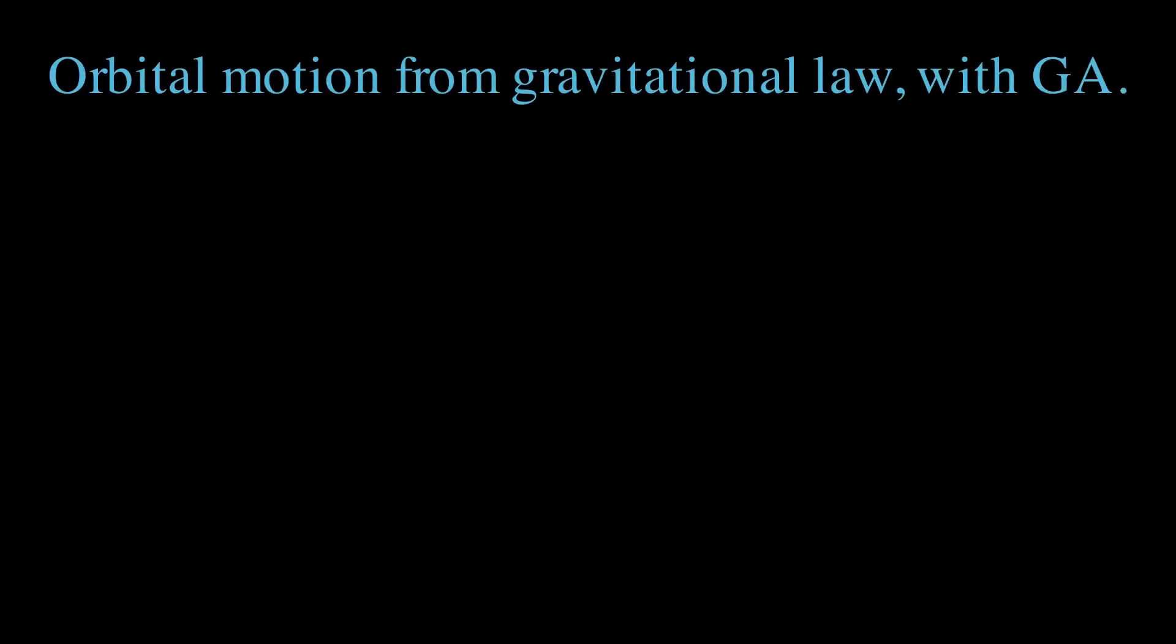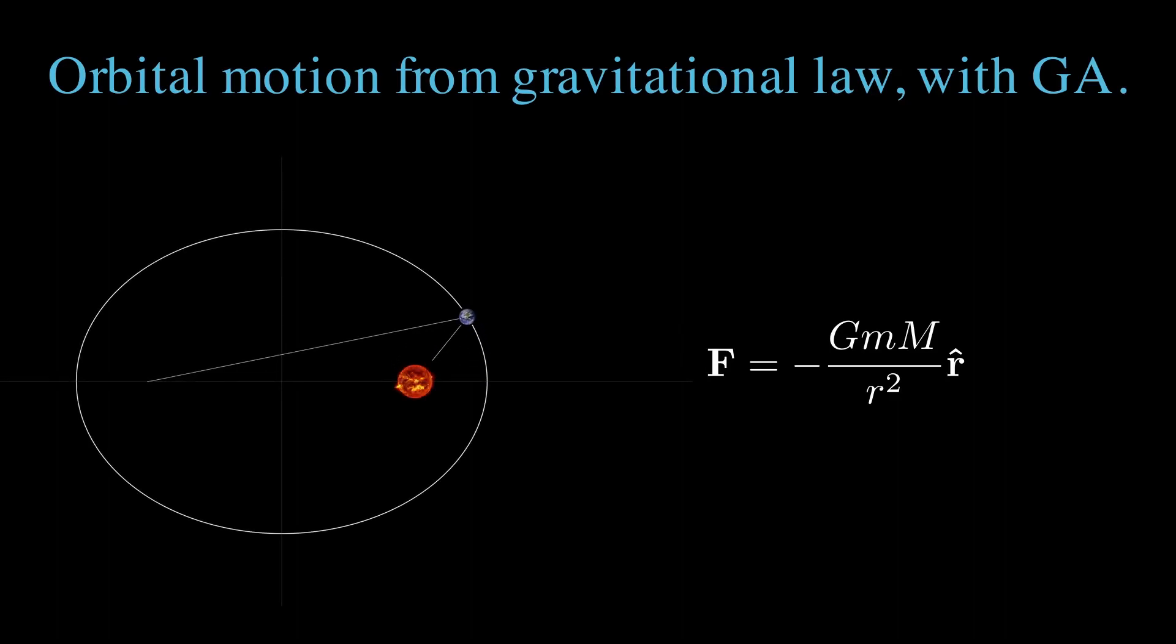In this video, we'll use geometric algebra to show how we go from Newton's law of gravity, f equals minus gmm over r squared, to an orbital motion, such as the elliptical orbital motion of the Earth traveling around the Sun.